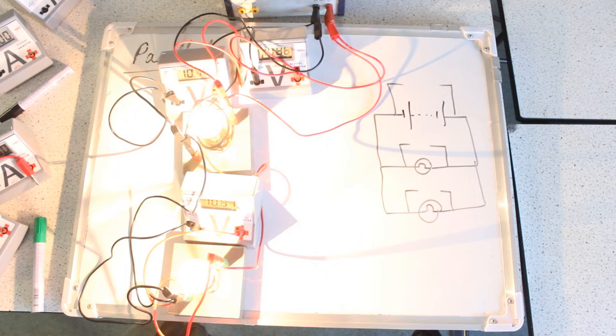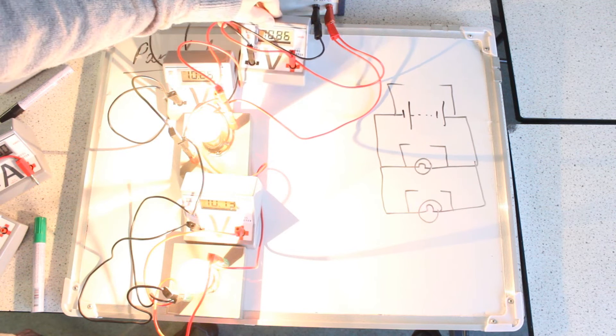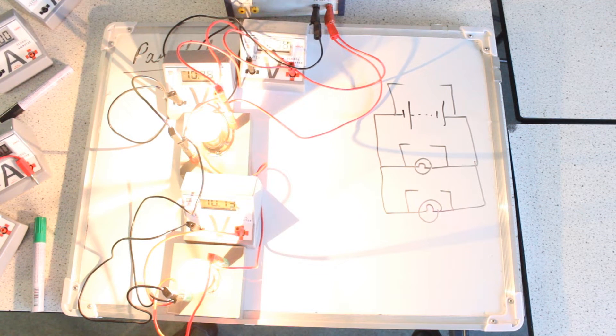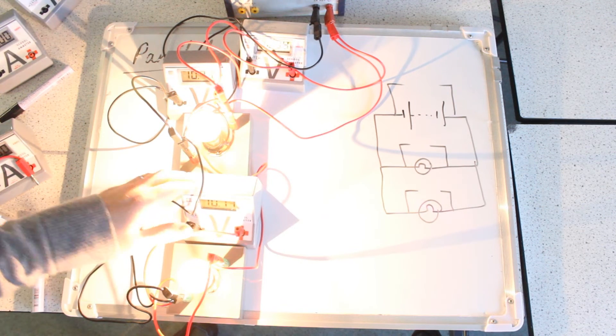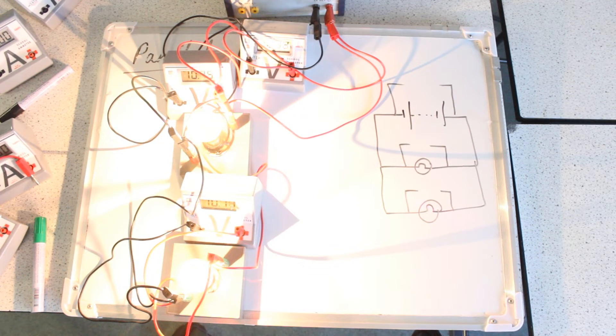So there we go. The brightness shouldn't be affected because the voltmeters aren't actually causing any change in the current through these bulbs, any change in the power. They've got very high resistances and they're in parallel, so they don't really affect how the bulbs are operating.